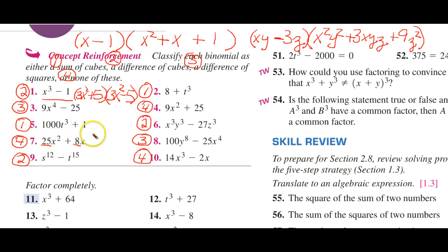So all that we could do here is factor out an x and get 25x plus 8. Doesn't help us a lot, but that's all we can do. That's why it's none of these. It's not one of these first three.